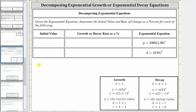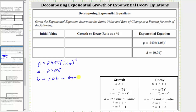Looking at our first equation, we have p equals 2,405 times 1.06 raised to the power of t. So a, the initial value, is 2,405. The base b is equal to 1.06, which is greater than one, and therefore we have exponential growth. And because we have exponential growth, the growth rate as a decimal is r, which is equal to b minus one. So we have r equals 1.06 minus one, which is equal to 0.06, which as a percentage is 6%.